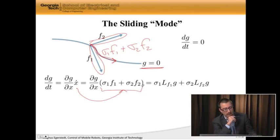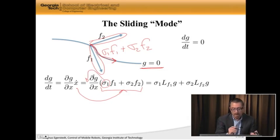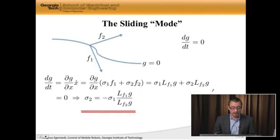Well, since these are scalars, I can actually pull them out here, which means that I can write this expression that's a little bit messy looking, like sigma 1 times the lead derivative of g along f1 plus sigma 2 times the lead derivative of g along f2. So that's what the time derivative of g actually is. But I want that to be equal to 0.